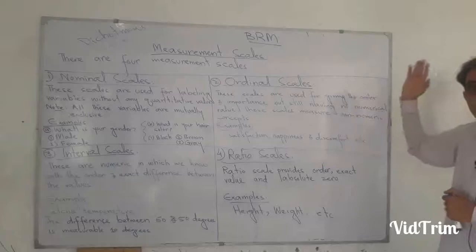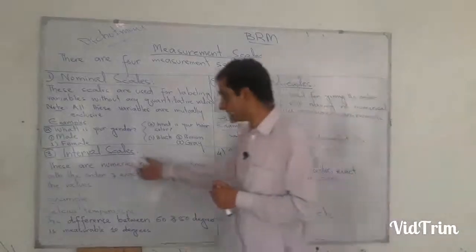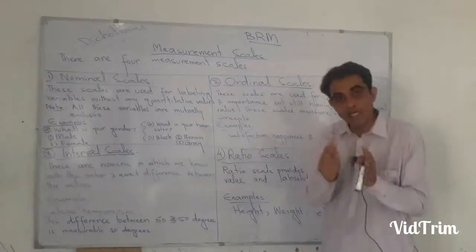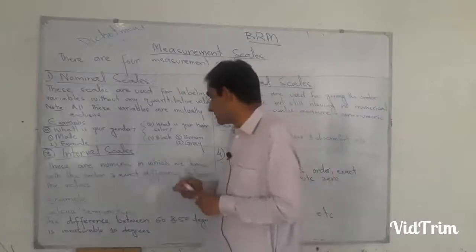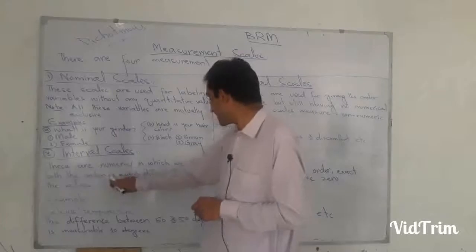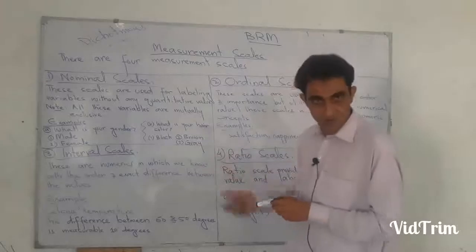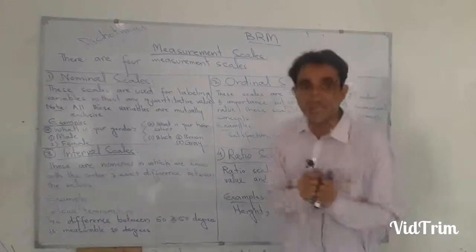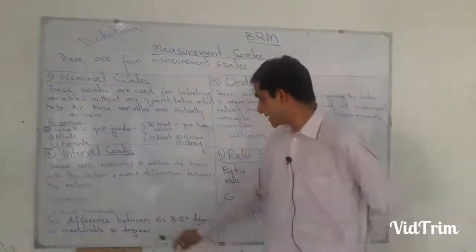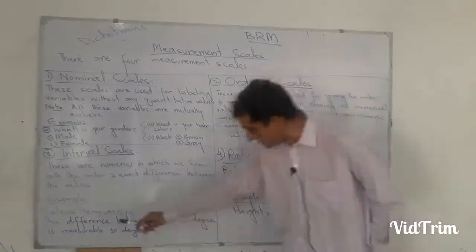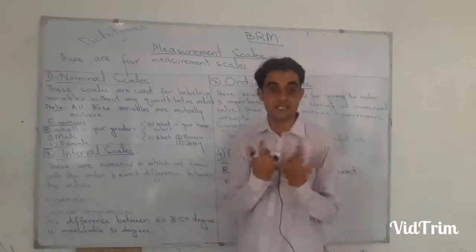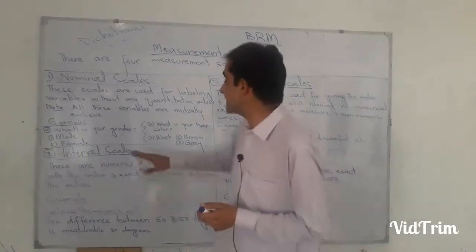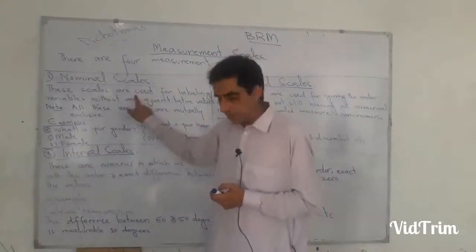Moving to interval scales: interval scales carry the characteristics of both nominal and ordinal scales, plus they carry quantitative numeric values. These are numeric scales in which we know both the order and the exact difference between values. For example, Celsius temperature — the difference between 60 degrees centigrade and 50 degrees centigrade is exactly 10 degrees centigrade. So there is a numerical value and the difference between two values is exactly known.